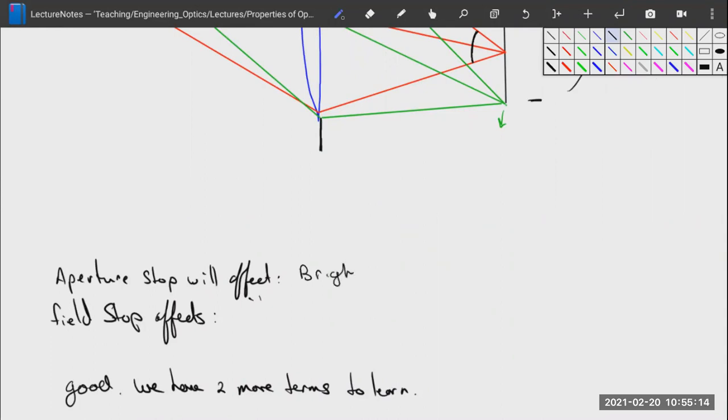An aperture stop will affect the brightness of an image, the resolution, and the depth of what we call focal depth in microscopes, also called depth of field in photography.